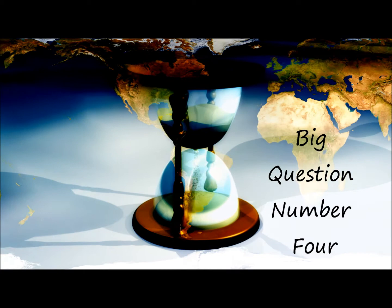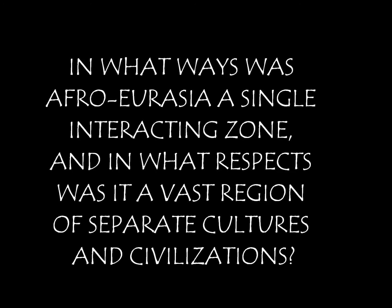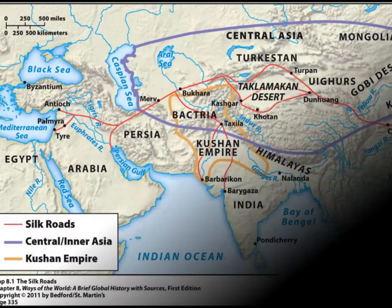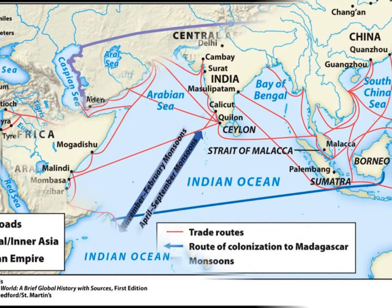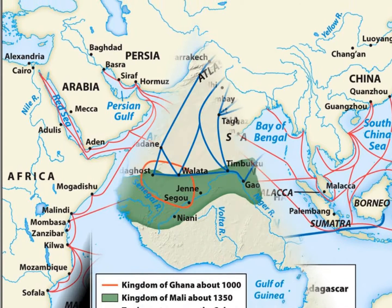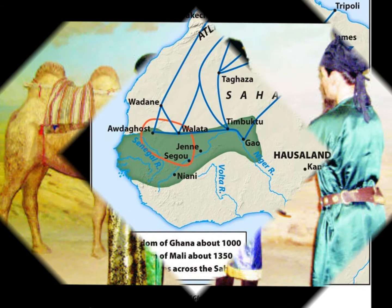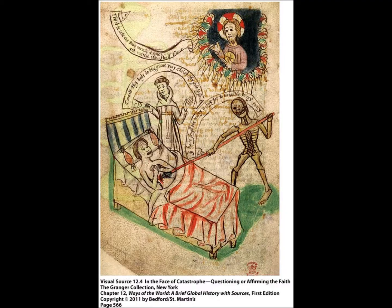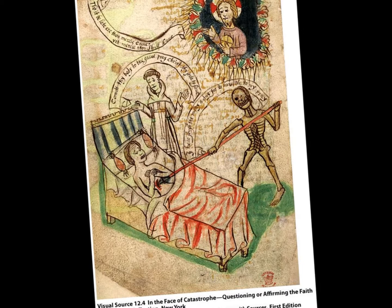Now we'll look at our final question: in what ways was Afro-Eurasia a single interacting zone, and in what respects was it a vast region of separate cultures and civilizations? First of all, Afro-Eurasia was an interacting zone in that it was a network of exchange that stretched all across the Afro-Eurasian world. It altered consumption and encouraged peoples across the zone to specialize in producing particular products for sale rather than being self-sufficient. The spread of ideas and diseases across large parts of the interacting zone provides evidence of extensive and sustained contact across long distances.